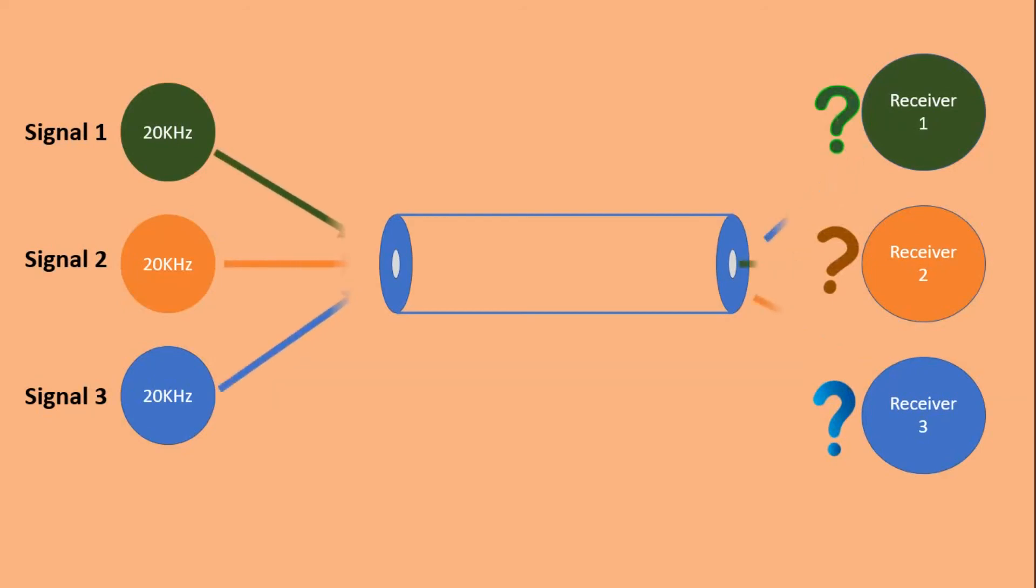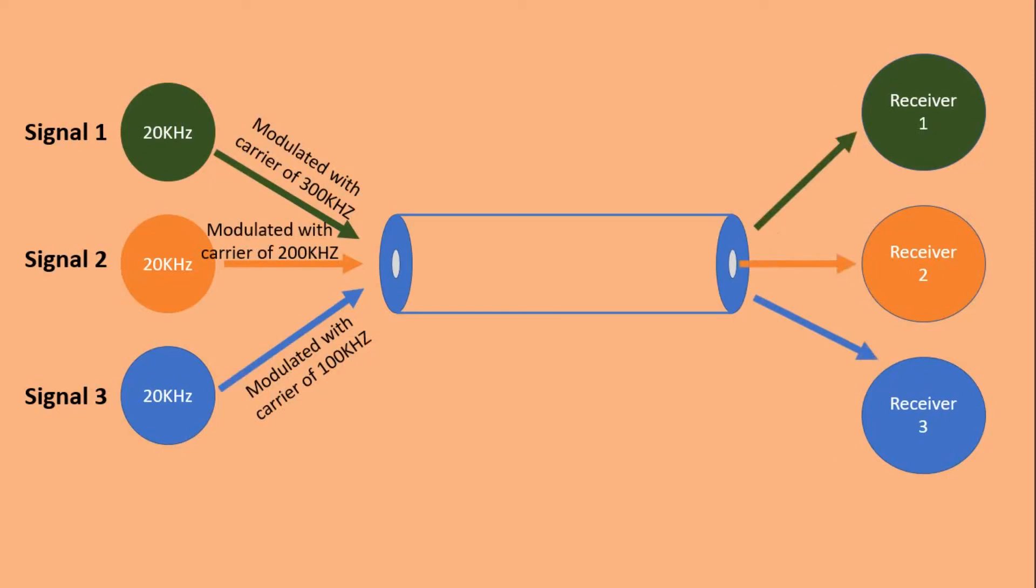But instead of that, if each signal is modulated at different carrier frequency, there will be no interference. And that is how interference can be reduced by modulation.